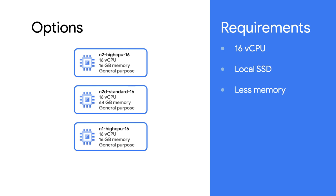Based on our requirements, we've narrowed down our choice to three options. As more machine families and series are added to the Compute Engine lineup, your available options might differ, so it's always a good idea to check the latest documentation. What factors came into play when you chose the right VM? Let us know in the comments.